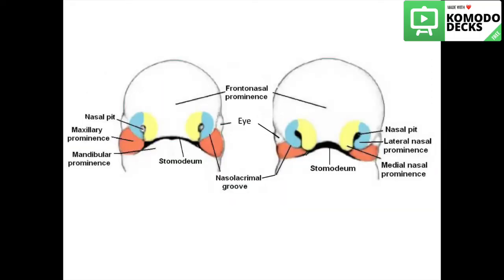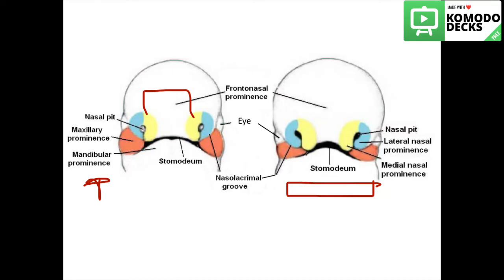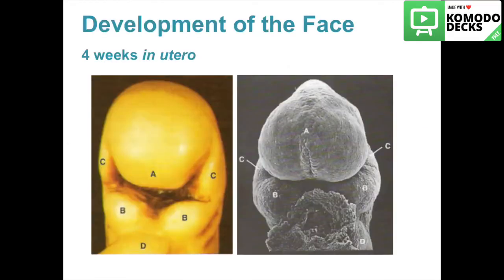Afterward, the maxillary prominences continue to increase in size. They laterally merge with the mandibular prominences to form the cheeks, and medially compress the medial prominences, moving toward the midline and finally fusing to form the upper lip. The upper lip is formed by the two medial nasal prominences and the two maxillary prominences. Here in A is the frontonasal process, B the two mandibular processes, and C the two maxillary processes.